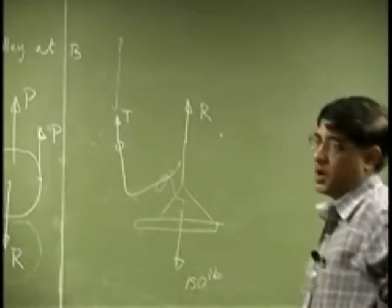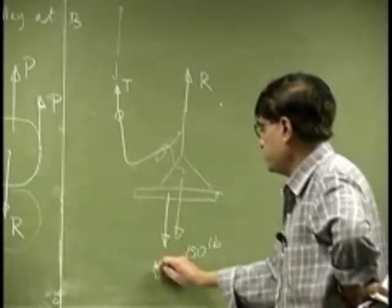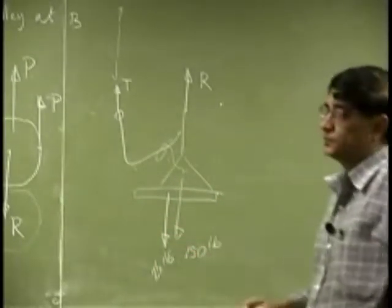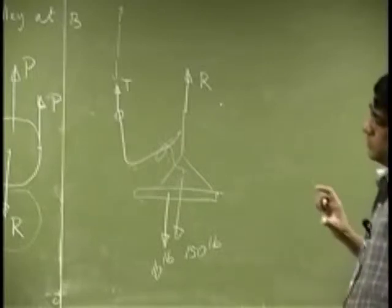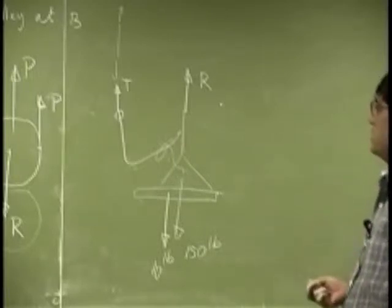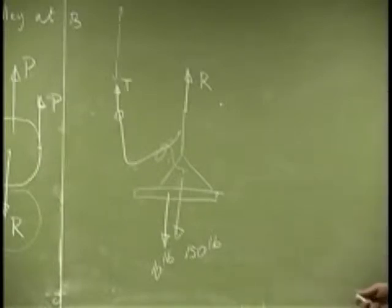There is another 150 pounds, then you have the plank weight, there is another 10 pounds. So that's just what you get as the free body for the bottom part of this diagram.